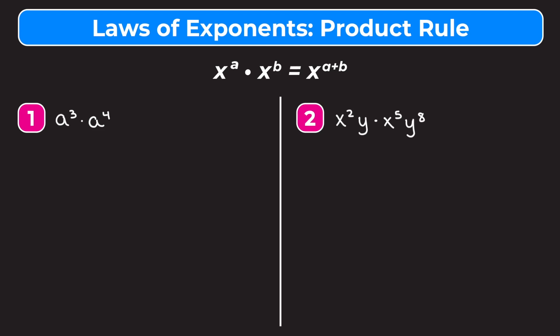If we take a look at example one, we have a to the third times a to the fourth. If we rewrite this out as the product of a's, we can write a to the third as a times a times a, and then a to the fourth as a times a times a times a. Now if we write this back as an exponent expression, we have seven a's multiplied together, so this is a to the seventh. That's where this rule comes from — you just add the exponents: a to the three plus four, which is a to the seventh.